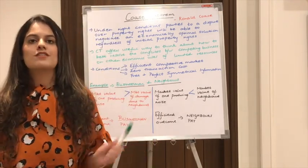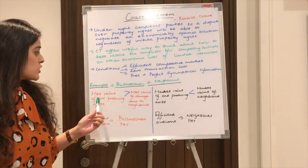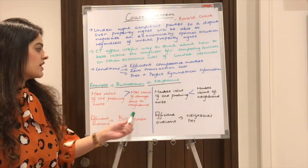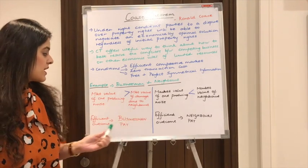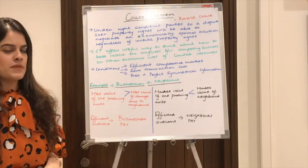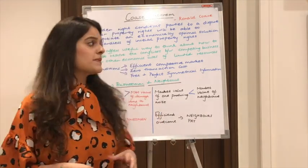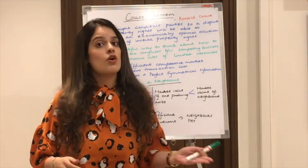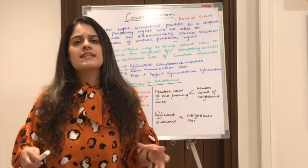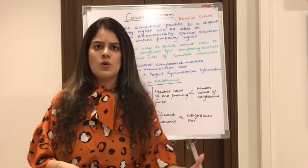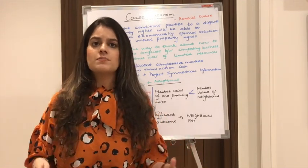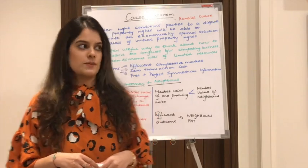We can solve this through Coase theorem. If the market value of producing the noise is greater than the market value of damage done to neighbors, the most efficient outcome is that the businessman pays. This happens when the businessman is generating a lot of revenue and it is necessary for him to produce that noise for production, so he will pay the neighbors but continue with his production.